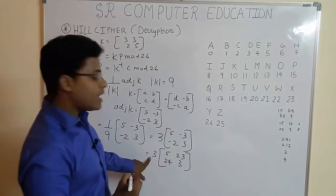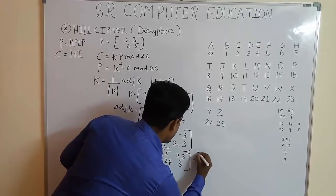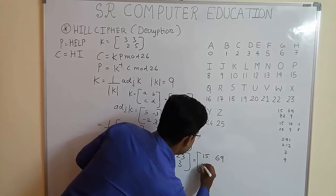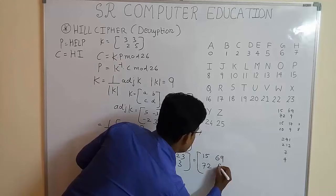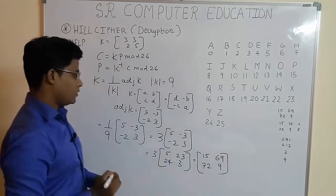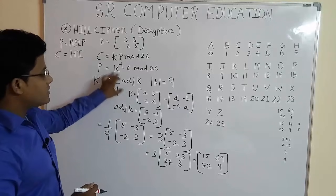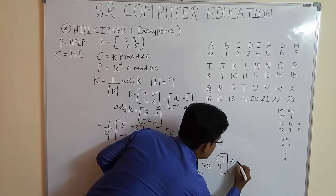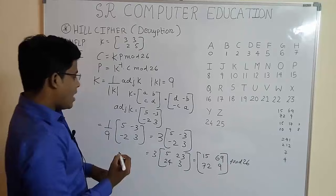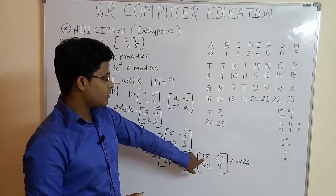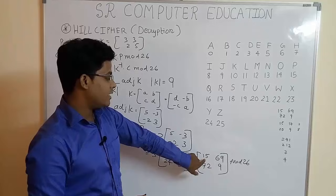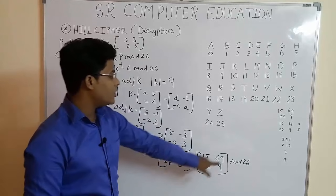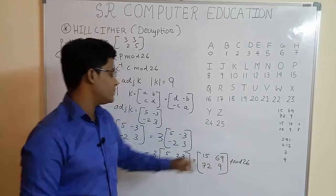Now multiply this number 3 inside this matrix, we get [15, 69; 72, 9]. So this is the K inverse matrix. So at last we are having modulo 26 also. Now we have to do modulo 26, that is 15 modulo 26 write the answer here, 69 modulo 26 write the answer here, 72 modulo 26 write the answer here, and 9 modulo 26 write the answer here.